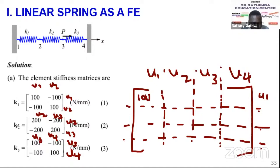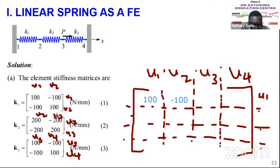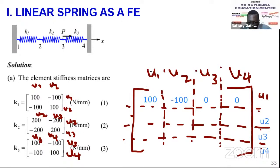I check all other elements to see if any other component contributes to u1-u1 — it only appears in K1, so that cell is 100. Moving to u2-u1: from K1 that value is -100. For u3-u1 and u4-u1, there is no such term in any element, so those become zero. Where you have zero, it means there is no connectivity between those nodes — nodes 3 and 1 are not connected anywhere.